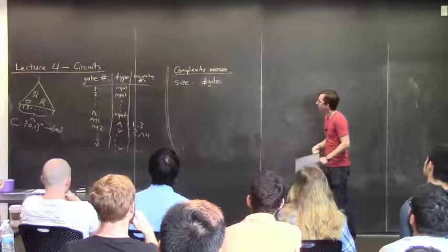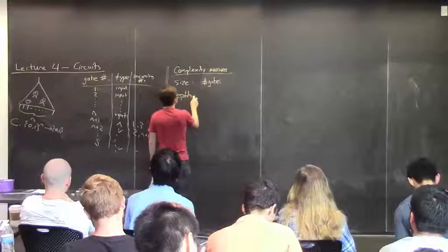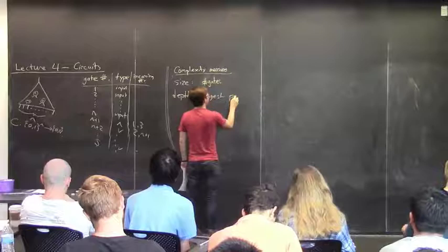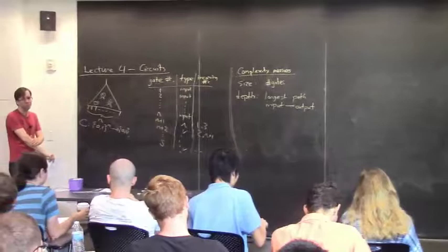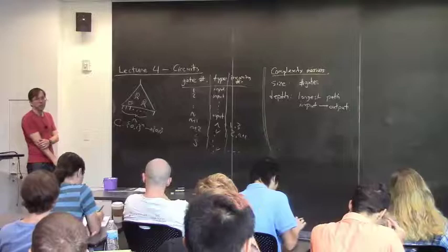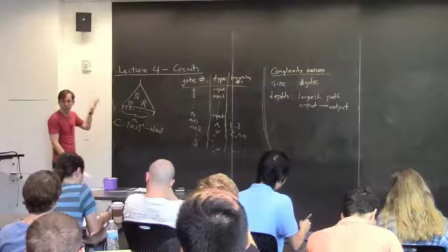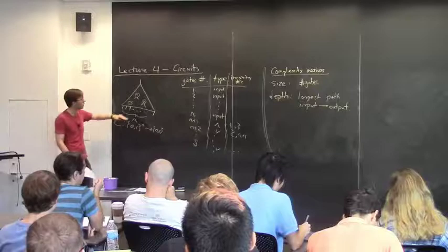The other complexity measure, which is a little less interesting but still interesting, is depth — the longest path from input to output, so the graph-theoretic depth. In some rough sense, depth corresponds somewhat to parallel time complexity. If you imagine having unlimited parallelism — say, a processor on every gate — evaluating a circuit would still take some time because higher gates have to wait for lower gates to compute their output. So the longest input-to-output path is sort of like the parallel time.